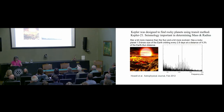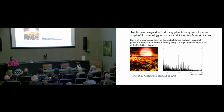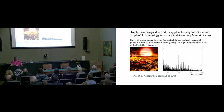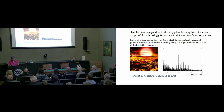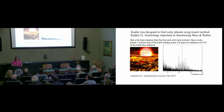Kepler was designed to find rocky planets by the transit method — you obstruct the light from the star as you go around. This is so-called Kepler 21. The seismology tells you the mass and radius of the star; the transit tells you the relative sizes and therefore gives you the size. Kepler 21 is a bit more massive than the Sun, a bit more evolved, with a rocky planet about one and a half times the size of the Earth, orbiting every 2.8 days at a distance of 4.3% — so not exactly in the Goldilocks zone.